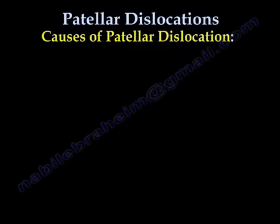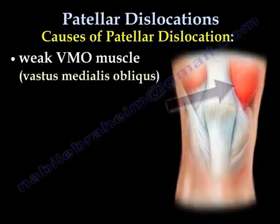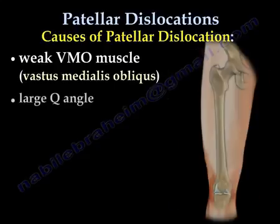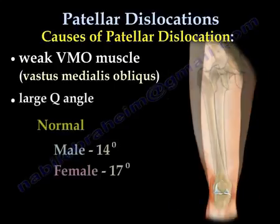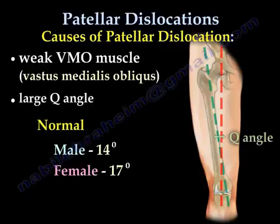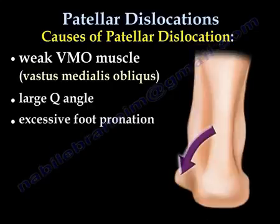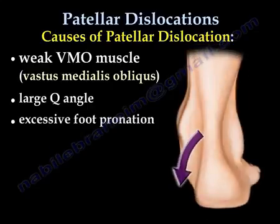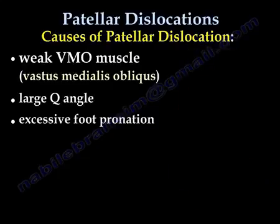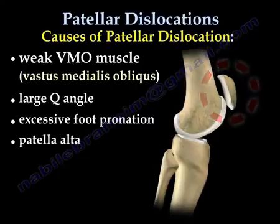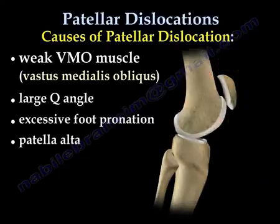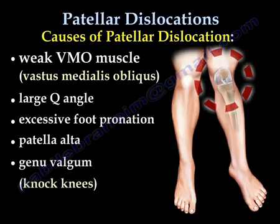Causes of patellar dislocations: weak VMO muscle — the vastus medialis obliquus muscle is weak; large Q-angle; excessive foot pronation; patella alta, meaning a high-riding patella; and genu valgum, or knock knee.